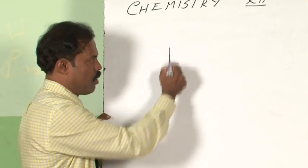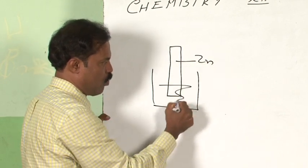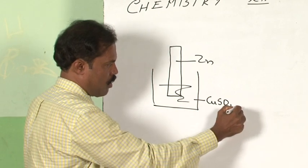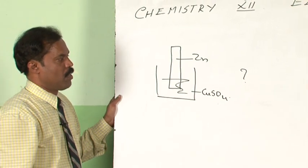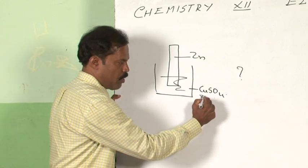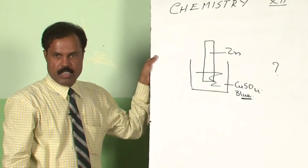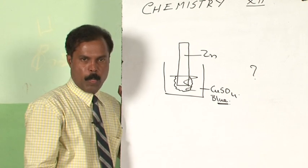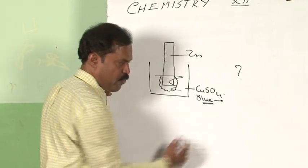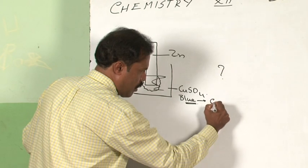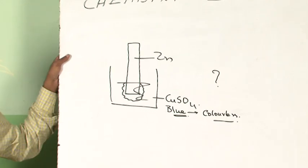Suppose you put a small piece of zinc in a solution of copper sulfate — what do you observe? You know the solution of copper sulfate is blue in color and zinc is a white colored metal. After a while the color of the solution will fade, and it will become colorless if you wait for a very long time. This is what we will discuss first: why is it happening?